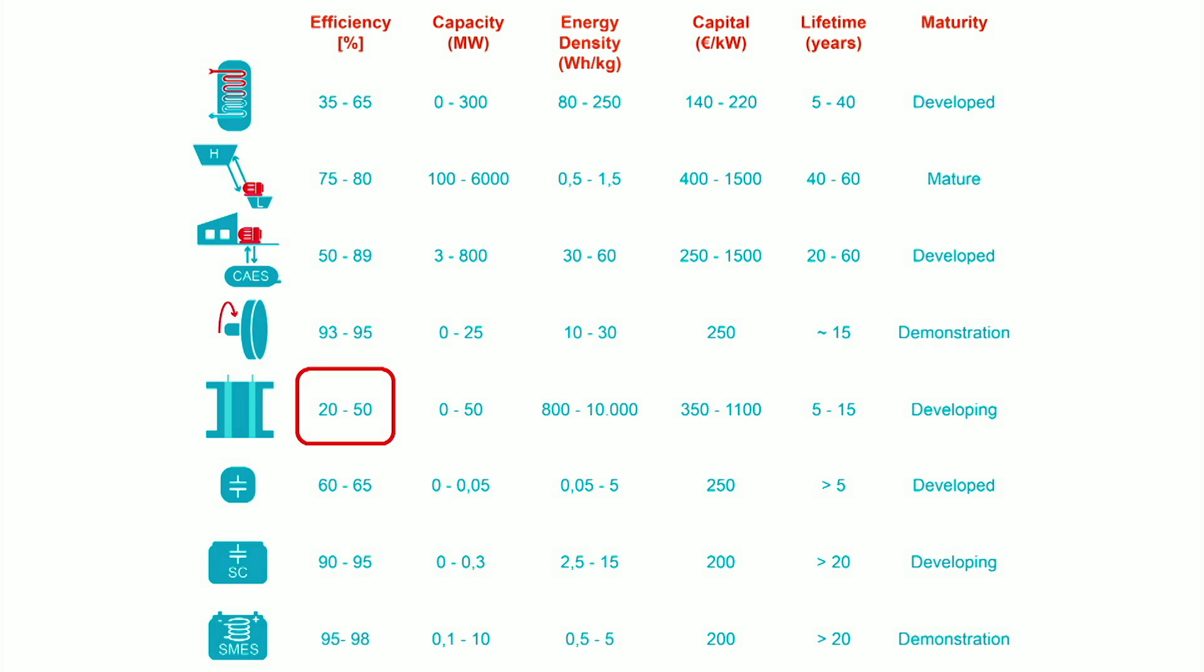The efficiency of fuel cell is comparatively low, between 20 and 50 percent. Capacitors have an efficiency around 60 percent while supercapacitor and superconducting magnetic energy storage have the electrical efficiency over 90 percent.